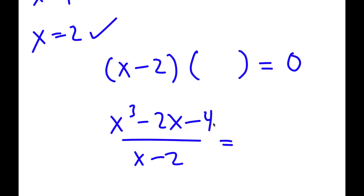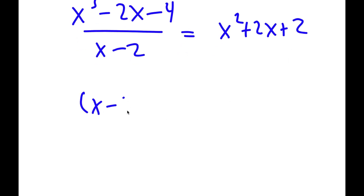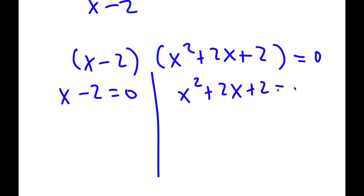You can solve this using either long division or the synthetic division method. Your result should be x squared plus 2x plus 2. So now I have x minus 2 times x squared plus 2x plus 2 is equal to 0, which gives me two equations: x minus 2 is equal to 0, and x squared plus 2x plus 2 is equal to 0.